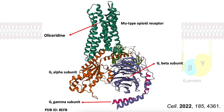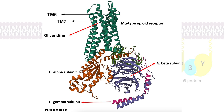Olyceridin acts as a biased agonist at the mu-opioid receptor by preferentially activating the G-protein pathway with minimal receptor phosphorylation and recruitment of beta-arrestin. It is proposed that olyceridin binding induces a different intracellular conformation of the mu-opioid receptor due to a lack of coupling with transmembrane helices 6 and 7, which confers the specificity of G-protein over beta-arrestin interaction. Therefore, ligands designed to reduce TM-6-7 interactions display preferential G-protein signaling.